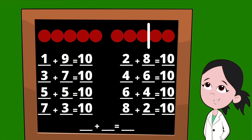Let's slide that line over just one last time. For our last set of partners, how many dots are on the left of our line? Good job — there are nine dots, so our first partner is the number nine. To the right of our line, we have just one dot, so our second partner is the number one. Nine plus one equals 10.